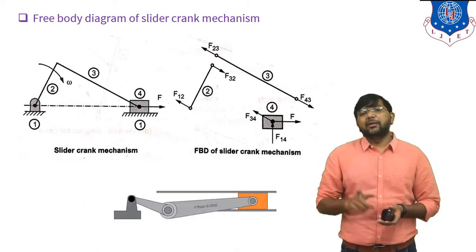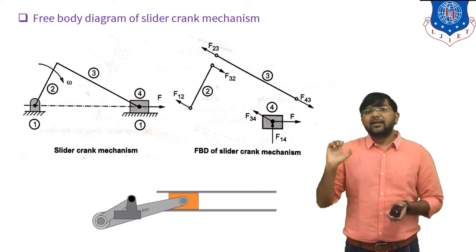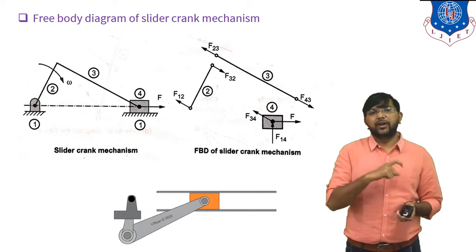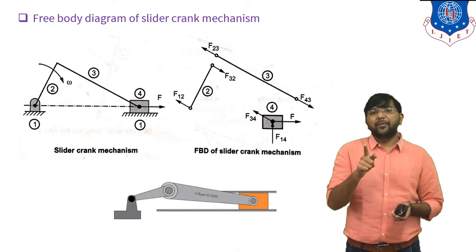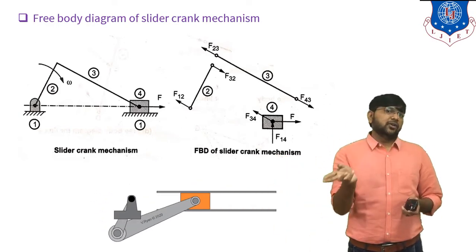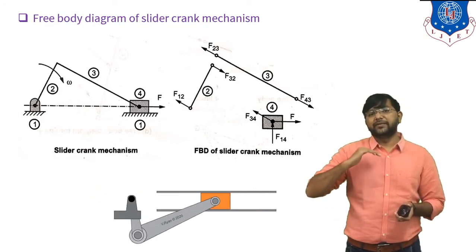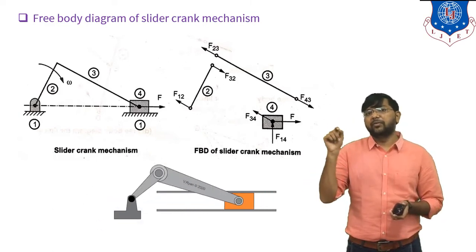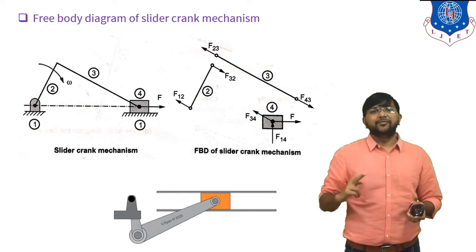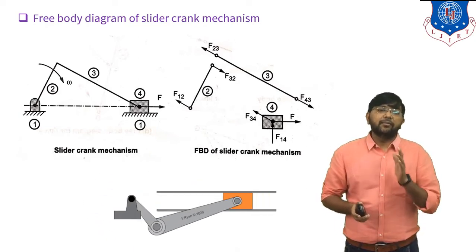For the piston, which has a sliding motion, a normal reaction is generated. A force F is applied in the positive direction — indicating the crank force applied on the piston. F34 acts in an inclined direction (piston applying force on the connecting rod). Normal reaction F14 acts upward, indicating the fixed link applies force on the piston. This is the free body diagram of the slider-crank mechanism.